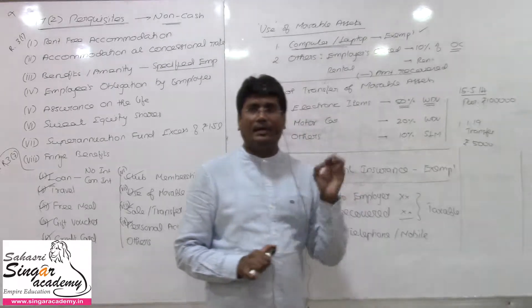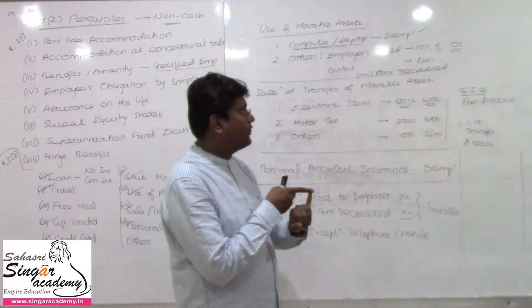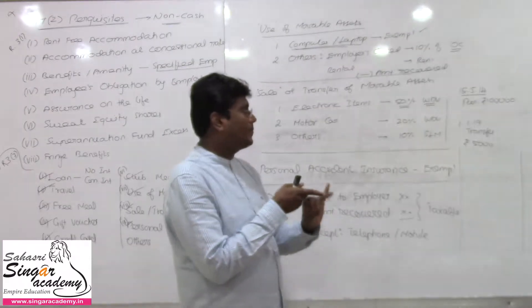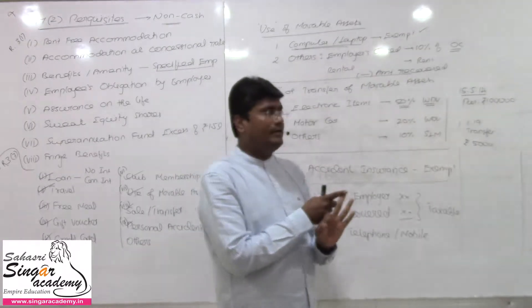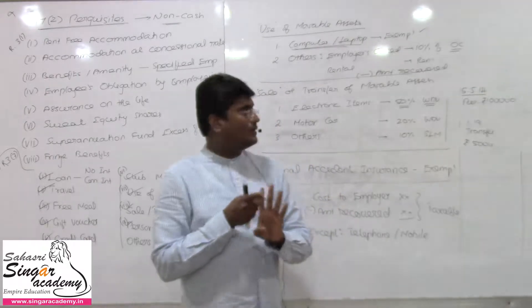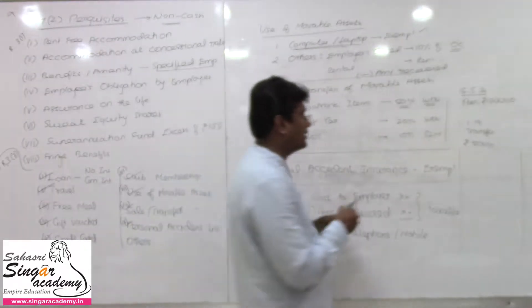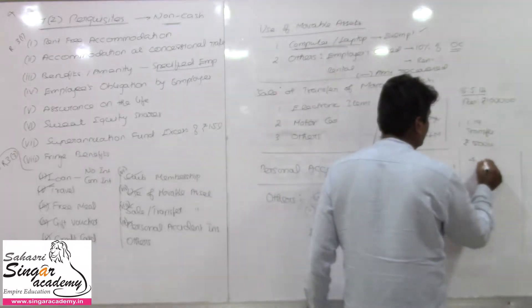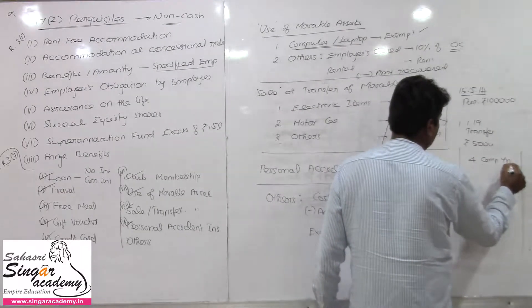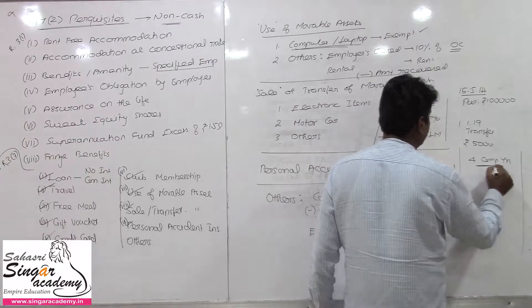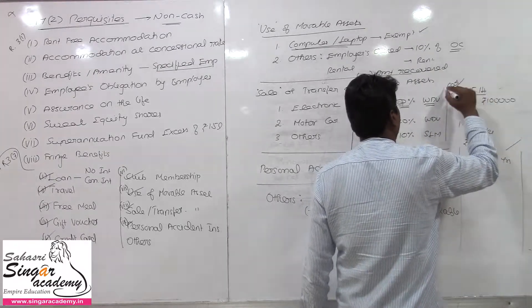From 15/5/2014 to 1/1/2019 — how many completed years? 2014 to 2015, 2016, 2017, 2018 — that gives 4 completed years. We assume this asset is a car.